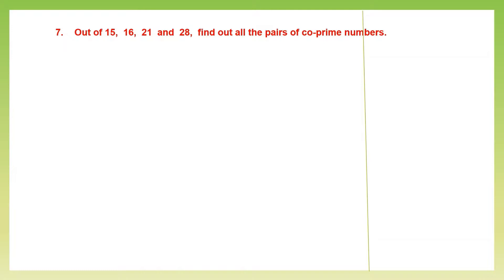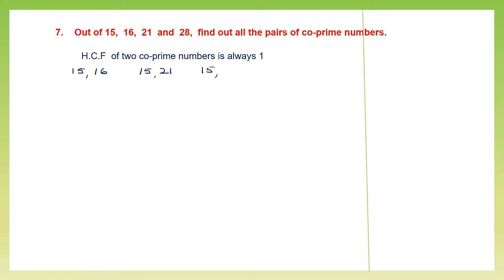Question 7: out of 15, 16, 21 and 28, find all pairs of co-prime numbers. Co-prime numbers have no common factor and their HCF is 1. Let's make all pairs: 15 and 16, 15 and 21, 15 and 28, 16 and 21, 16 and 28, and 21 and 28. We'll check each pair to see if its HCF is 1.